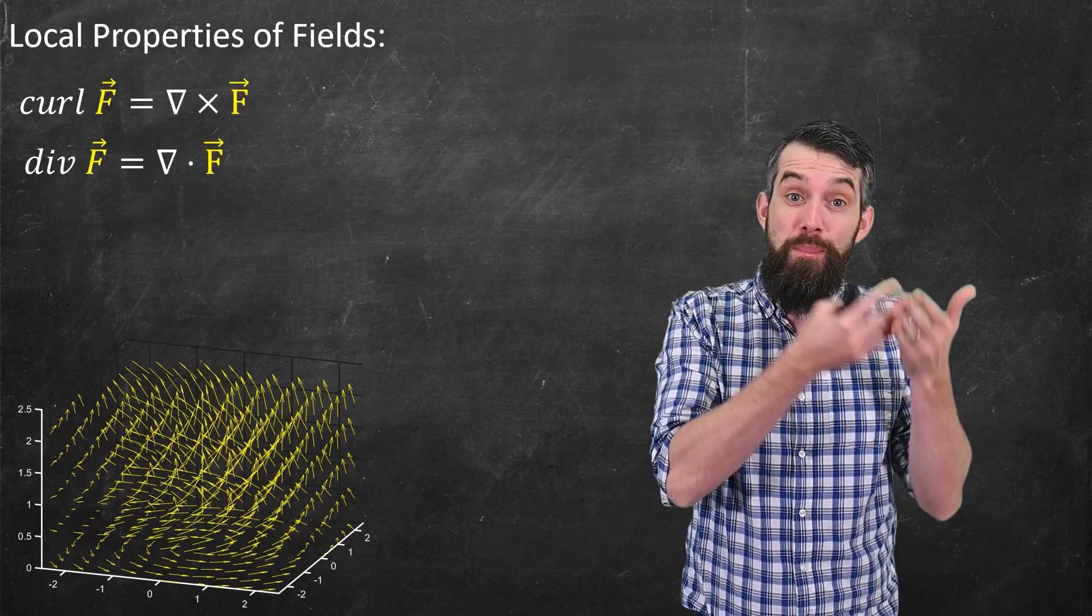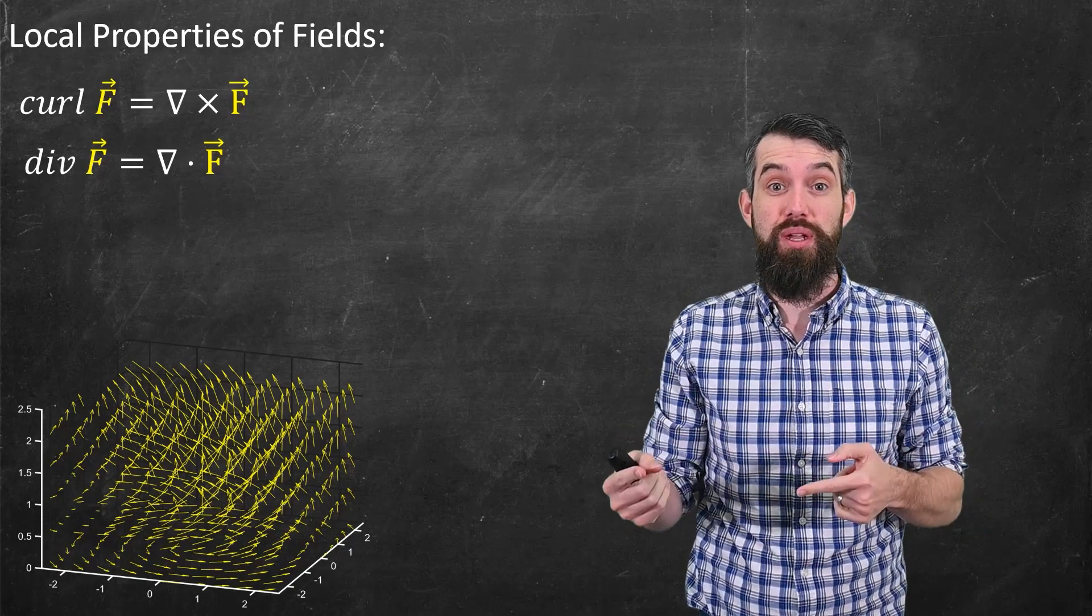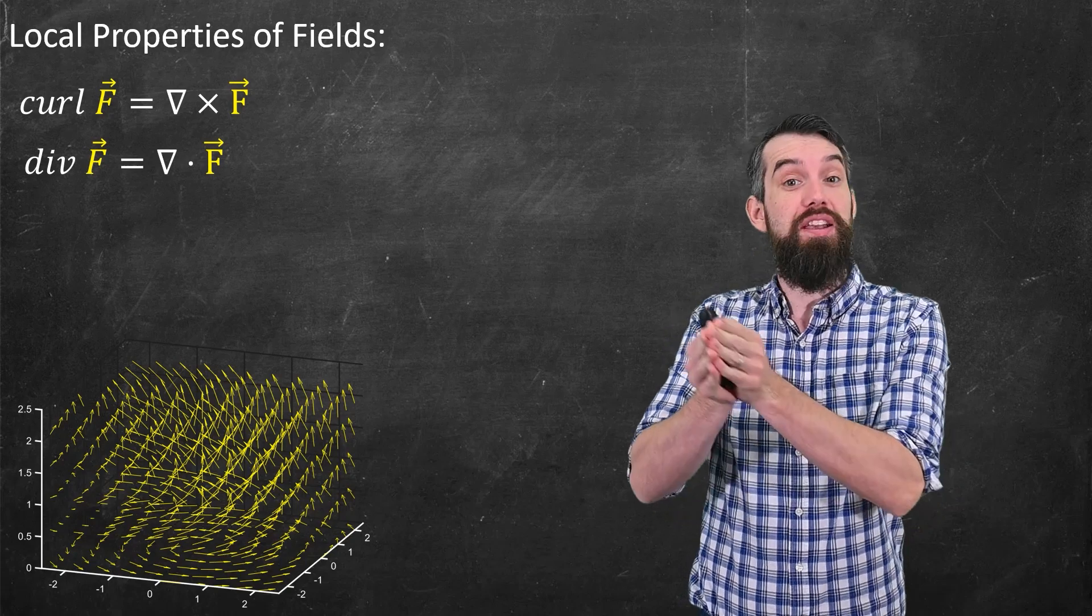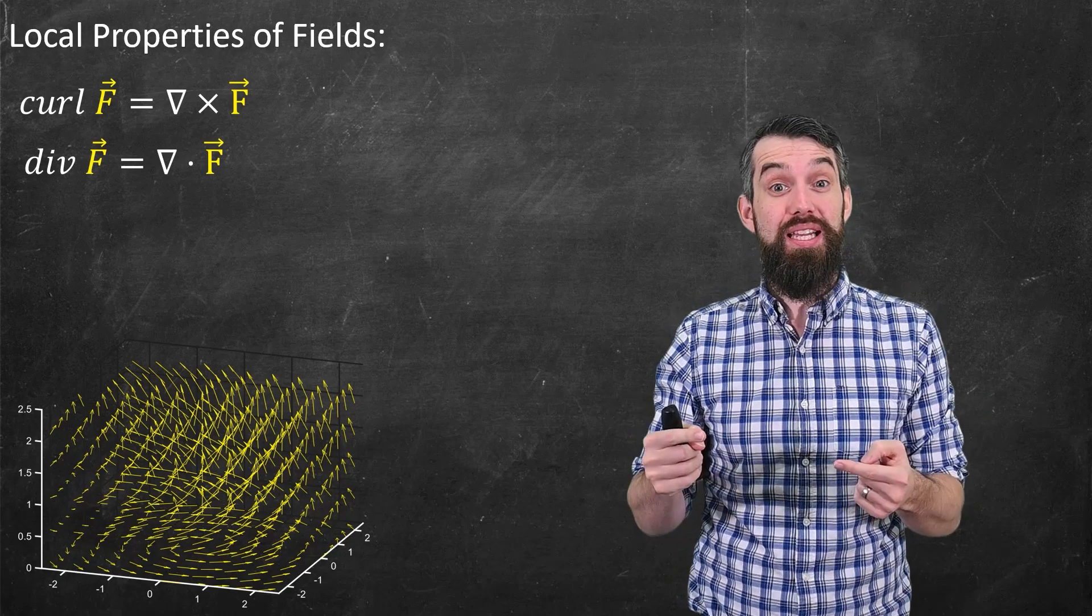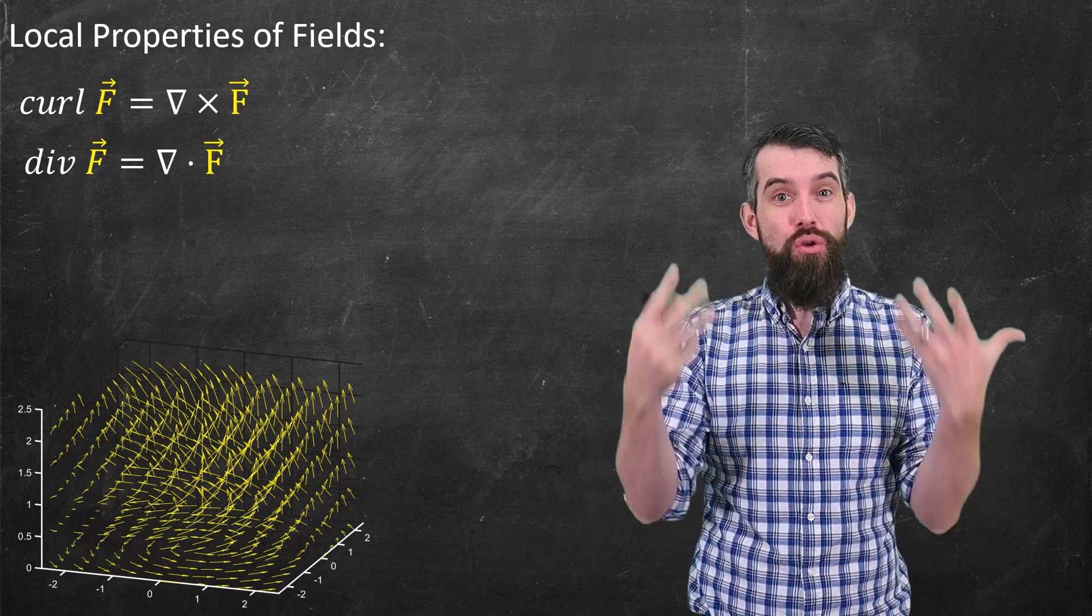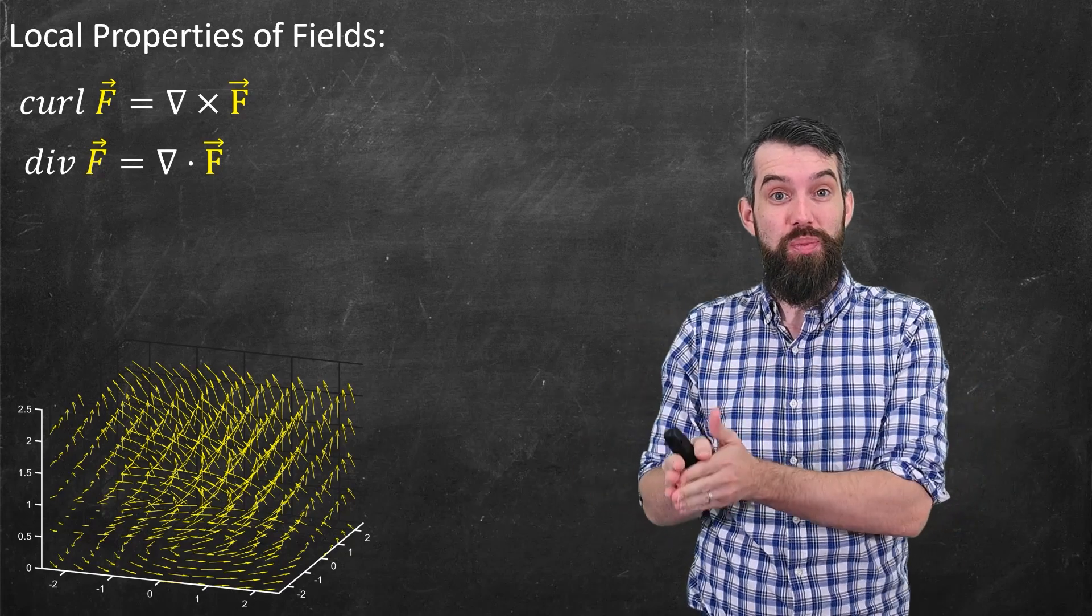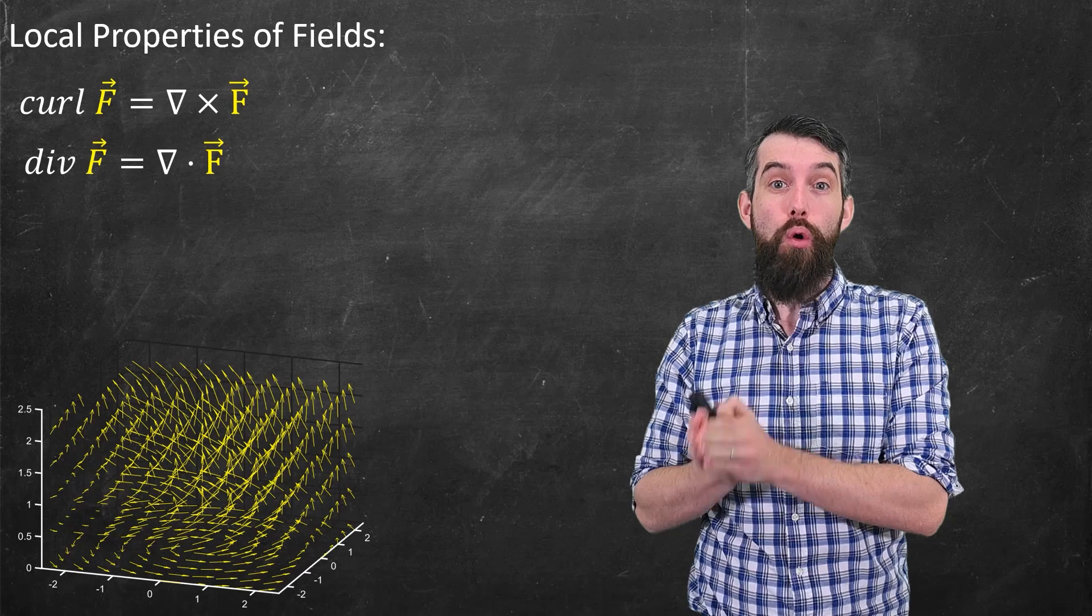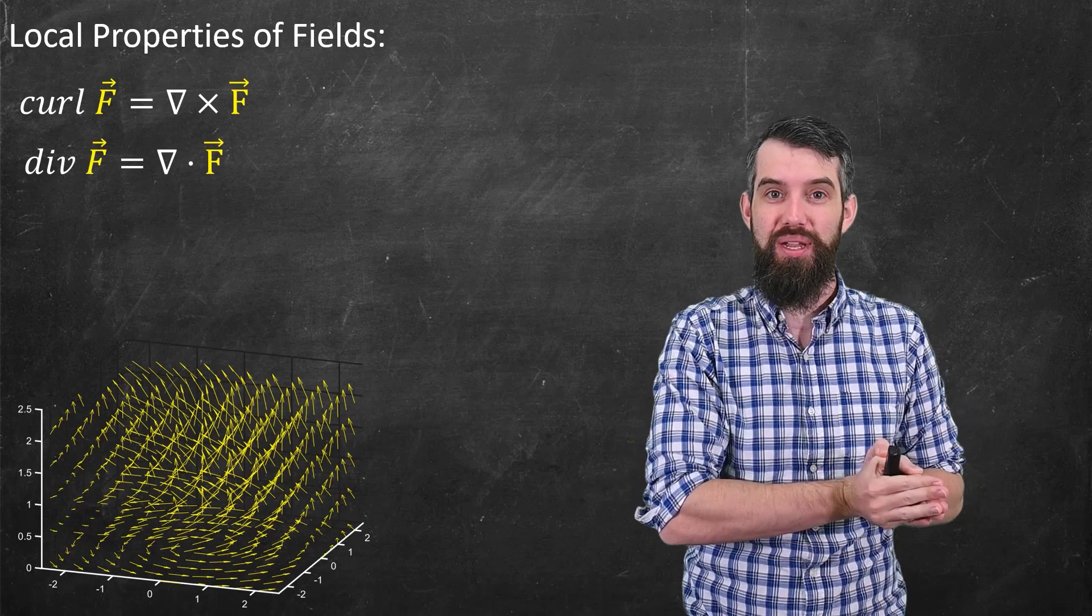In this video, we're going to walk through the major theorems of vector calculus: Green's Theorem, Stokes' Theorem, and Divergence Theorem. We're going to see that all of these theorems have a common theme that can be unified with an underlying principle, and indeed, a theme that extends all the way back to the fundamental theorem of calculus.